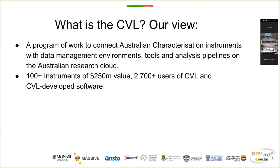Fundamentally, the Characterisation Virtual Laboratory is a program of work to connect Australian characterisation instruments with data management environments, tools, and analysis pipelines for Australian research. The achievements of the program today include over 100 Australian instruments connected — many funded by NCRIS — representing significant value to researchers both financially and in the data produced. We've had over 2,700 users of either the CVL or the software we've developed under it.